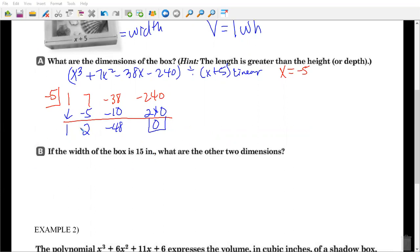So I know that my quotient is 1x squared plus 2x minus 48. So I'm going to factor that to find my length and my width.